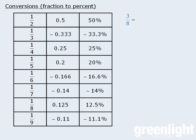For example, to convert 3 eighths into a percent, we use the fact that 1 eighth equals 12.5%, which means 3 eighths is 3 times as large, or 37.5%. Similarly, to convert 2 ninths into a percent, since 1 ninth is approximately 11.1%, 2 ninths is approximately 22.2%. For the fraction 87 over 100, any fraction with 100 in the denominator is quickly converted — the numerator equals the percent — so 87 over 100 is 87%.